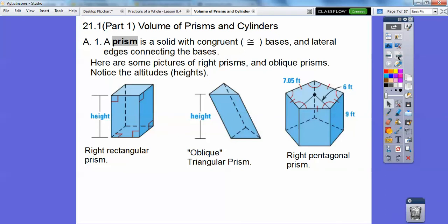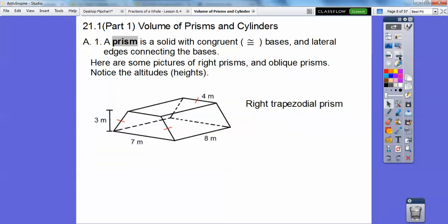Oblique means it's just not a right prism. Here's a right pentagonal prism. It's right because this is a right angle. This lateral face makes right angles with these congruent bases. Can you see the top and bottom are congruent pentagons? That's why it's called a right pentagonal prism. They're named by the bases, the congruent figures.